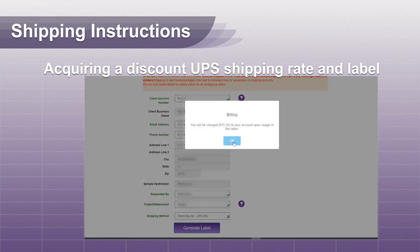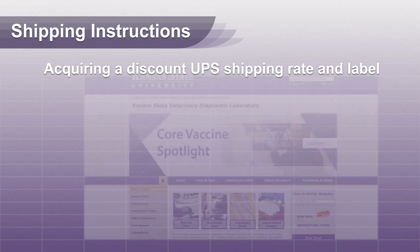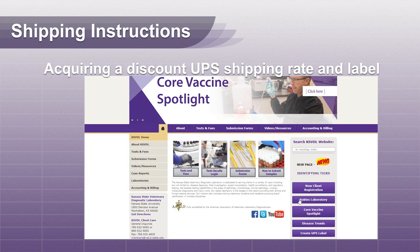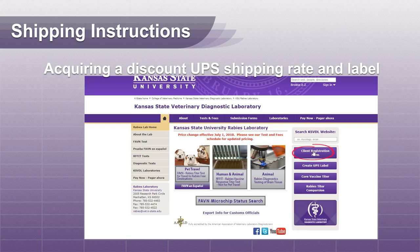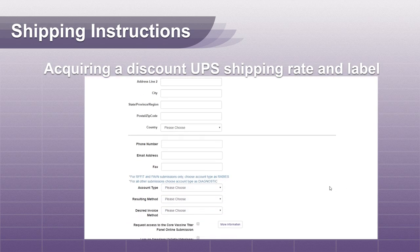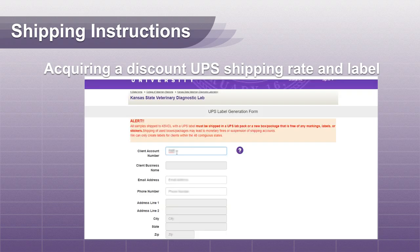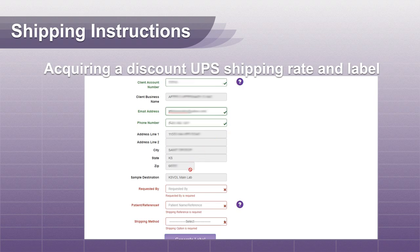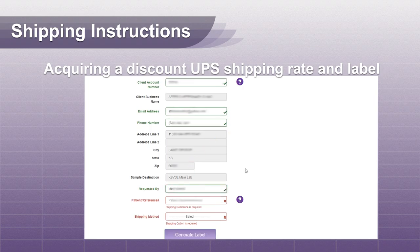If you haven't submitted to the rabies lab in the past, go to the KSVDL website, click on the rabies lab tab, and complete and submit the online client registration form. KSVDL will input your information into our database and Client Care will email you a rabies client account number. Once you have your account number, you can use it to create a UPS label by clicking the Create UPS Label tab.